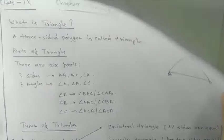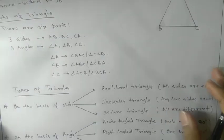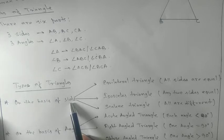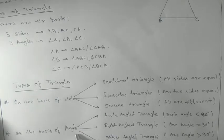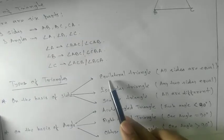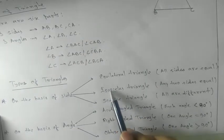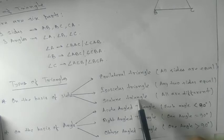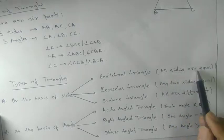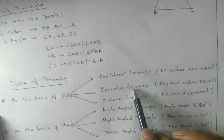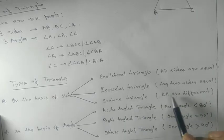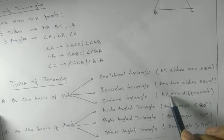There are six types of triangles — on the basis of sides there are three types and on the basis of angles there are three types. On the basis of sides: equilateral triangle means all sides are equal; isosceles triangle means any two sides are equal; and scalene triangle means all sides are different in length.